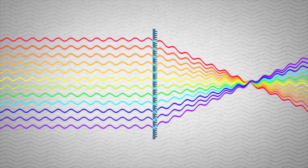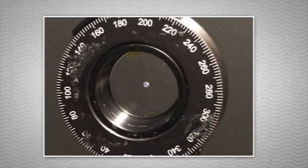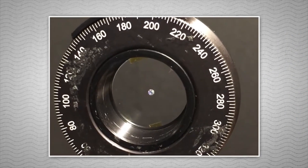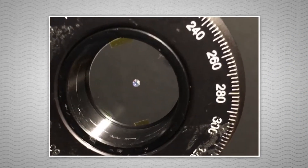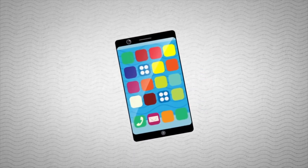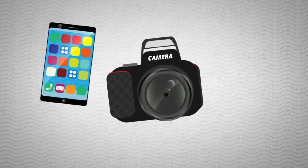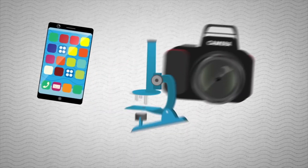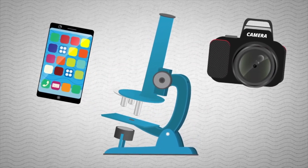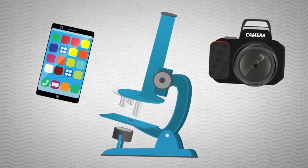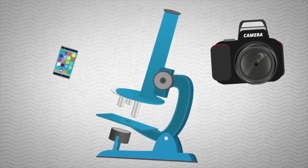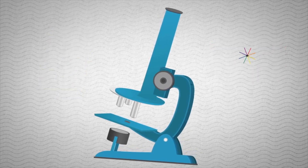The next step is to focus all of the visible spectrum into the same focal length using a metasurface lens. Once this happens, these glitter-sized lenses can replace the lens in a smartphone, regular camera, microscope — anywhere a lens might be needed — and the great shrinking can continue.